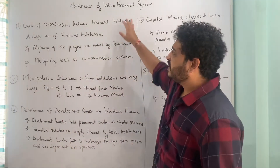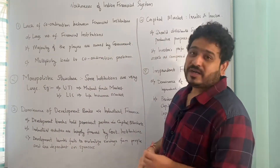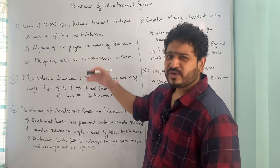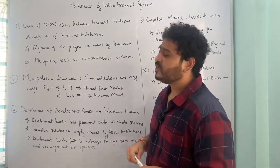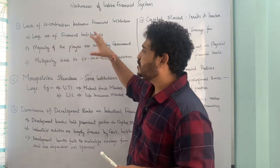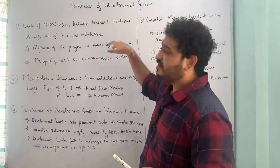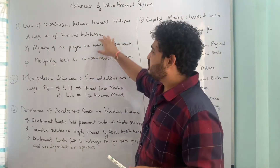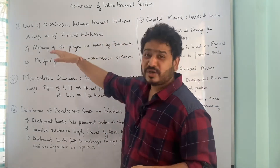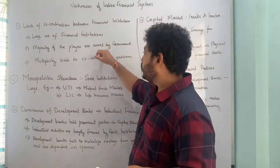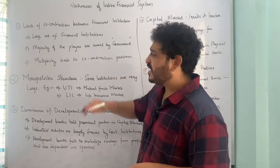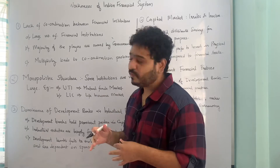The first point of weakness is lack of coordination between financial institutions. There are a large number of financial institutions under the Indian financial system, and that is why there is a lack of coordination between them. Moreover, the majority of the players are owned by the government — most of them are public sector entities — and that is why there is a lack of coordination between them.